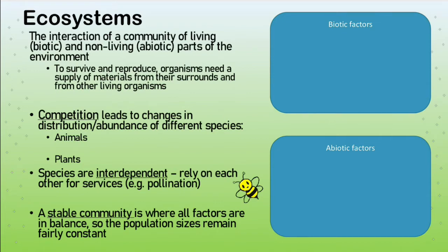Within an ecosystem, in the biotic part, we have competition — basically the fighting for resources, mates, food, space, and shelter that animals and plants will do. This leads to change in the distribution and abundance of different species, which is what field studies will try to measure. Competition can lead to change in distribution — how things are spread — and abundance, which is how common or rare they are.